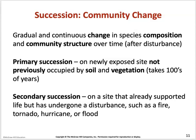Succession is the gradual and continuous change in species composition and community structure over time, occurring only after a disturbance such as a volcanic eruption or earthquake. Primary succession occurs on a newly exposed site that had no prior soil or vegetation. It takes hundreds of years for species to gradually come and colonize this new land.